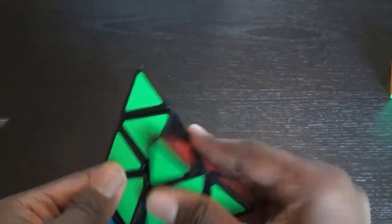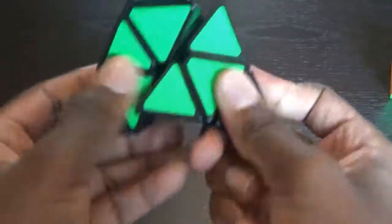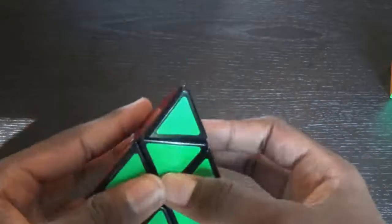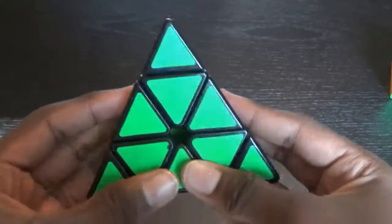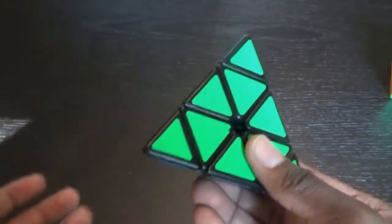Here's a QiYi Ming A, my first pyraminx ever. I really enjoy this puzzle. It's fast, stable and clicky and the tips are a pleasure to turn. But this cube can't really corner cut during solves, obviously, resulting in lock-ups and slips when turning fast.